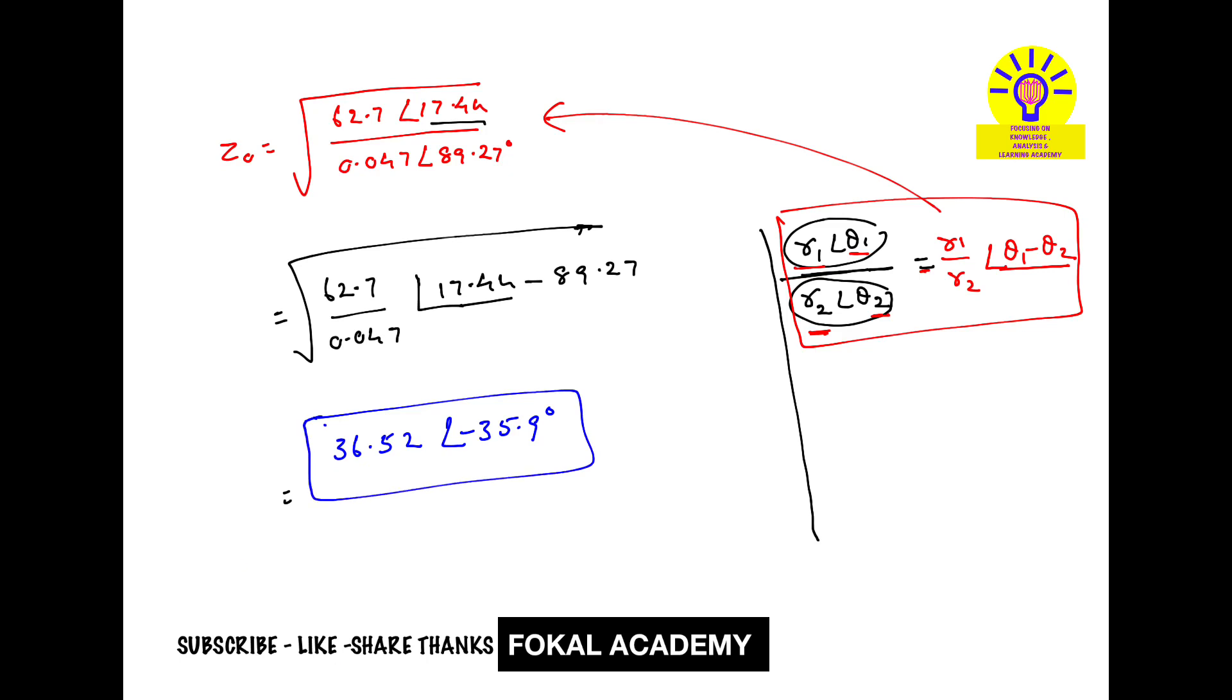If you want to convert into rectangular form, you can also convert this. The polar form r∠θ can be converted to rectangular form as r(cos θ + j sin θ). This is the standard formula for converting polar form to rectangular form. Let's consider this is r and this is the phase angle θ.